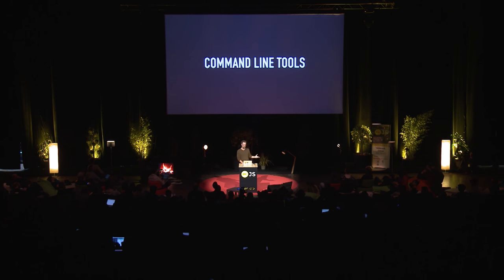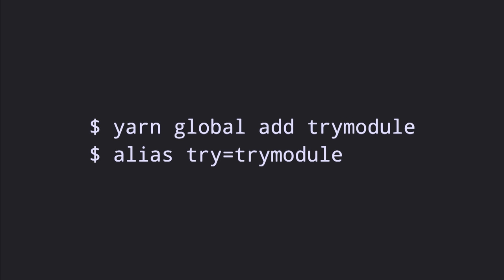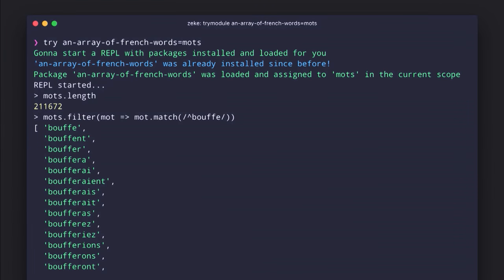Here are some command line tools. If you haven't used Yarn yet, yarn global add is the equivalent of npm install --global. I alias try-module to 'try' — it's an NPM package that creates a REPL with the given package preloaded. In this case I'm trying the array-of-french-words package, giving it a shorthand name, and interacting with it right in the REPL. It's easier than creating a temporary project, running npm install, and requiring it — it just skips a bunch of steps to quickly assess whether the package is what you want.